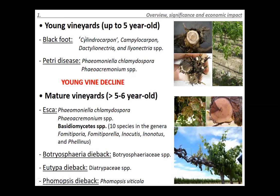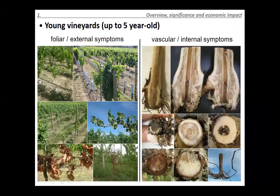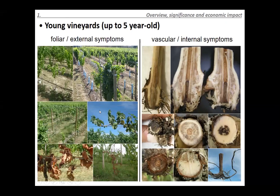In mature vineyards we have the ESCA complex, plus dieback and decline diseases including Eutypa dieback, Botryosphaeria dieback, and Phomopsis dieback. In young vineyards, foliar and external symptoms include loss of vigor, general decline, problems thriving, short internodes, and sometimes sudden collapse during the growing season. In cool or cold climate regions, these symptoms can be confused with winter kill or spring frost damage.